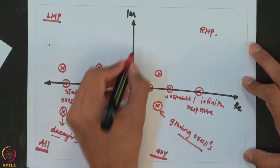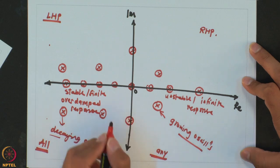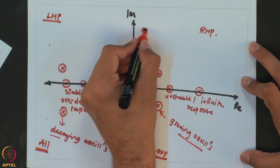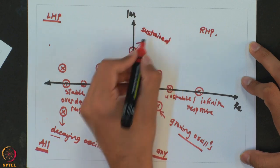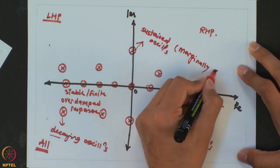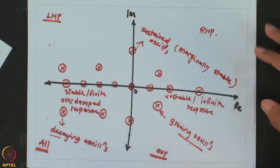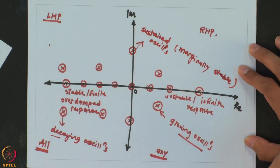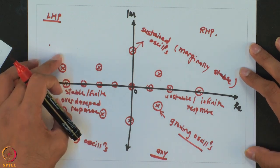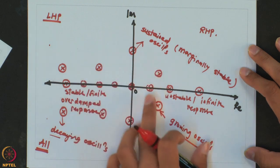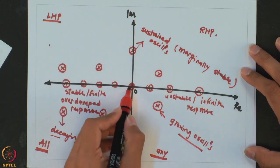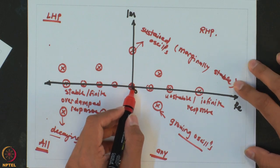The last case is if your poles are complex conjugate with a real part of zero — purely imaginary poles. In that case, what you will get are sustained oscillations, which is also known as a marginally stable process. So depending on where the poles of the process lie, you may have an overdamped stable finite response, decaying oscillations, growing oscillations, an unstable or infinite response, sustained oscillations, or an integrator which increases linearly as a function of time.